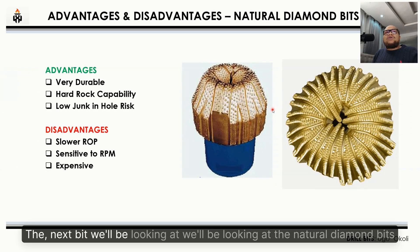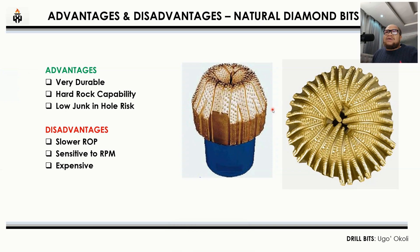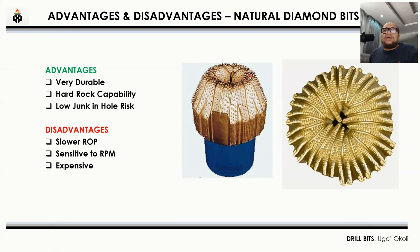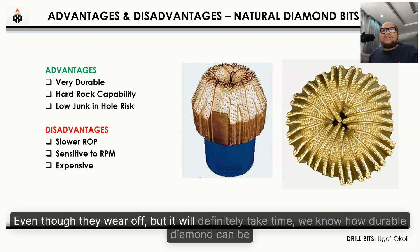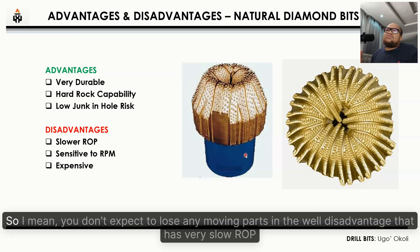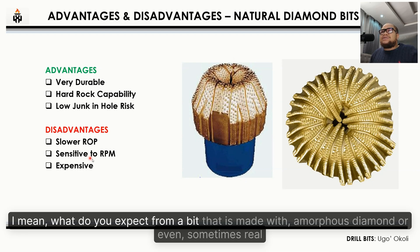Natural diamond bits are very durable — we're talking about diamond, the hardest thing on earth. With diamond bits, you can drill extensively and even though they wear off, it will definitely take time. Diamond is very useful for very hard formations and has very low junk-in-hole risk, being a fixed cutter bit with no moving parts to lose. Disadvantages: very slow ROP, sensitive to RPM, and expensive — as expected from a bit made with amorphous or real diamond.